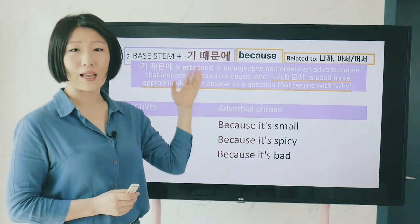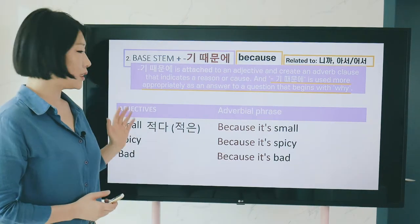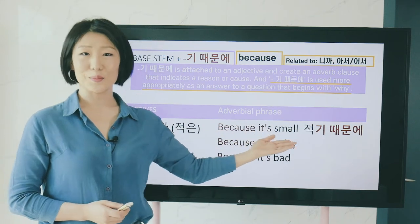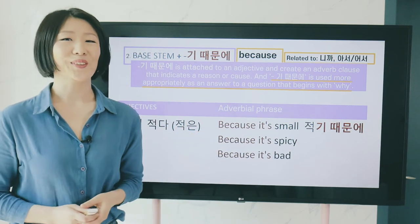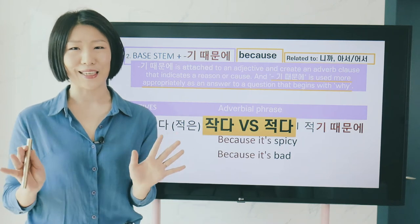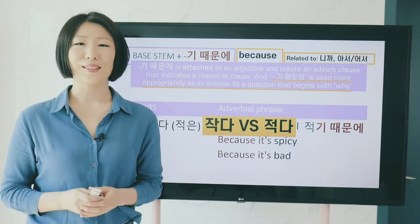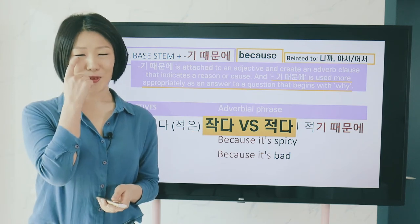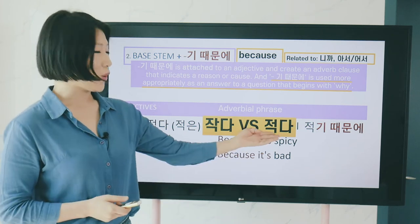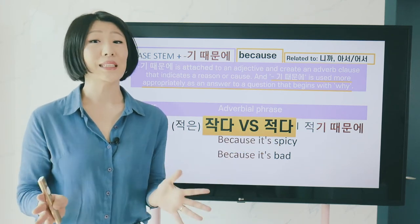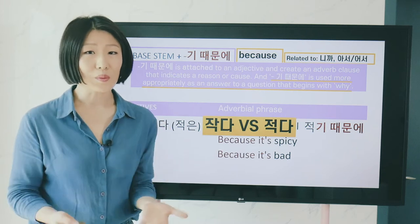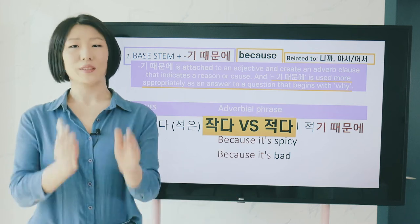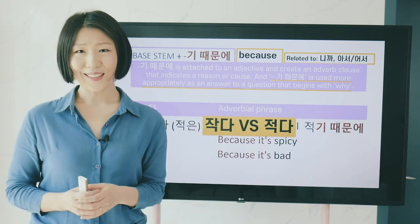기 때문에 is attached after the base stem. For example, 적다 (small in quantity) becomes 적기 때문에 (because it's small/few). Note that 적다 and 작다 are different: 작다 refers to size (제 눈이 작아요 — my eyes are small), while 적다 describes quantity or number of people.